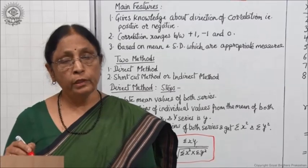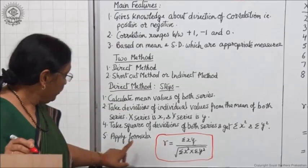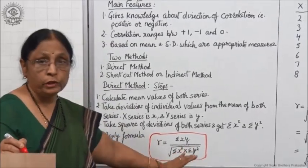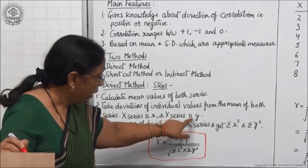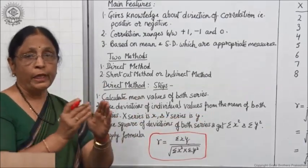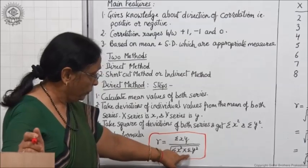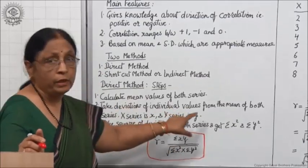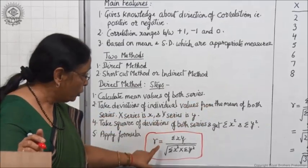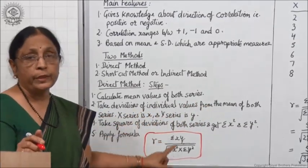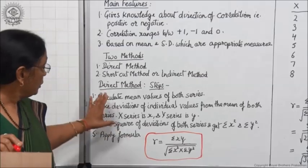Remember that for the assumed mean you have to apply a different formula, which we will take later. As the formula says σxy, you have to calculate x values and y values and then get xy by multiplying x into y. Similarly, we get x² and y² to put the values into the formula. If you know the formula, there is no need to memorize the steps — you will know what steps are to be followed to apply the formula properly.